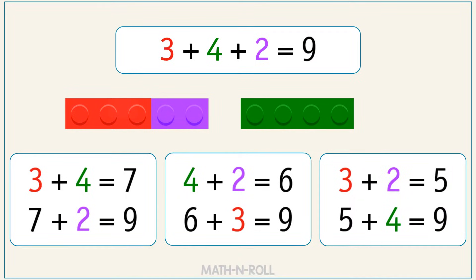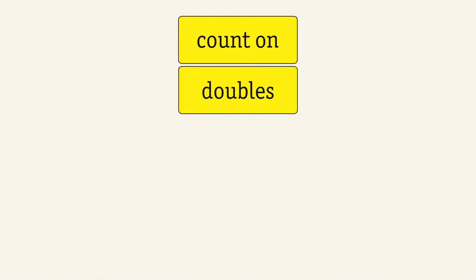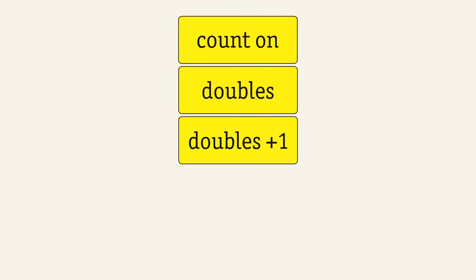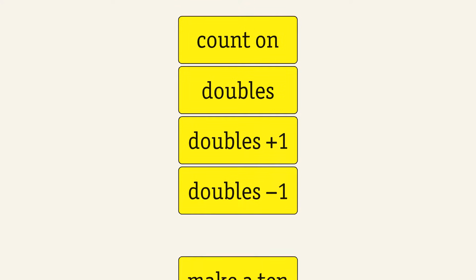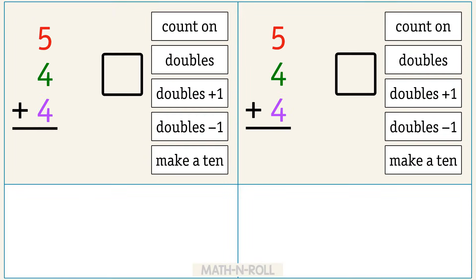We can use five different strategies to add three numbers: count on, doubles, doubles plus 1, doubles minus 1, and make a 10. Let's do some examples. Choose a strategy. Circle two addends to add first. Write the sum. Then find the total sum. Then use a different strategy and add again. You can group the addends in any order and in different ways to find the sum.